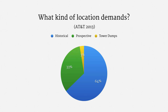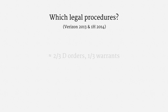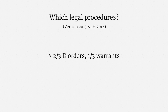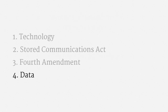The last category, tower dumps, covers a special sort of historical demand. A tower dump is a list of phones that are in certain areas at certain times — it's like the reverse of an ordinary historical demand. Tower dumps are particularly controversial because they can sweep in hundreds or thousands of innocent bystanders. As for the legal procedures used to compel location data, Verizon's reports show about two-thirds of location demands use a D-order and about one-third have a full-blown warrant. This reiterates that the majority view in the courts, for now, is that cell phone location data is not protected by the Fourth Amendment's warrant requirement.